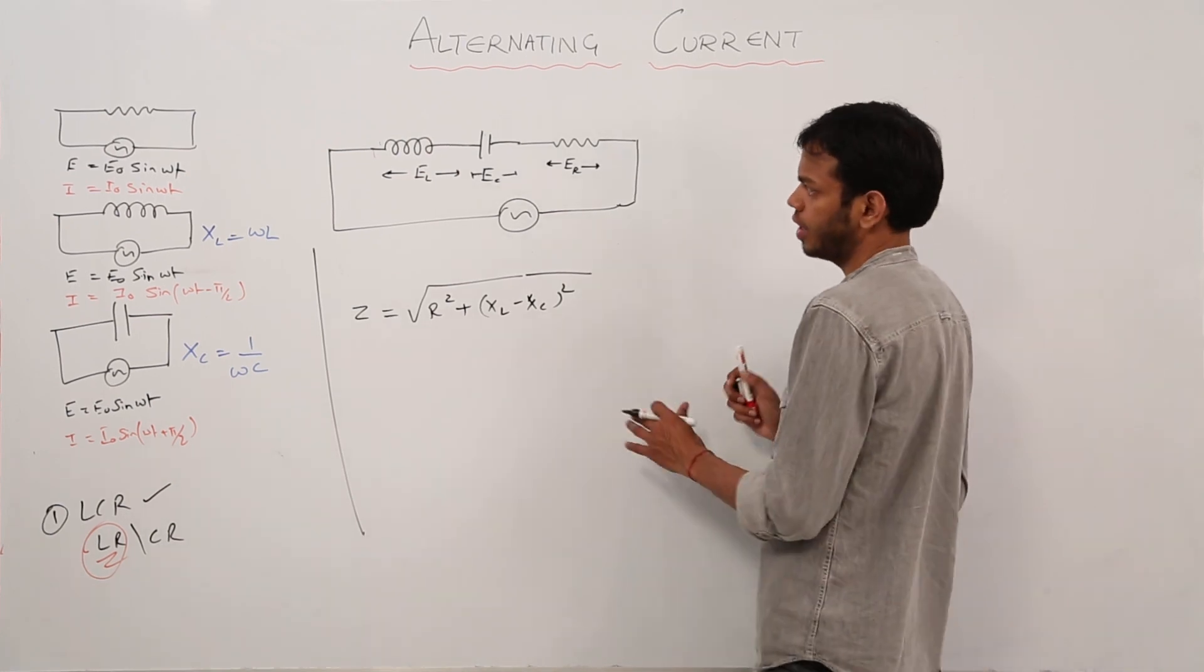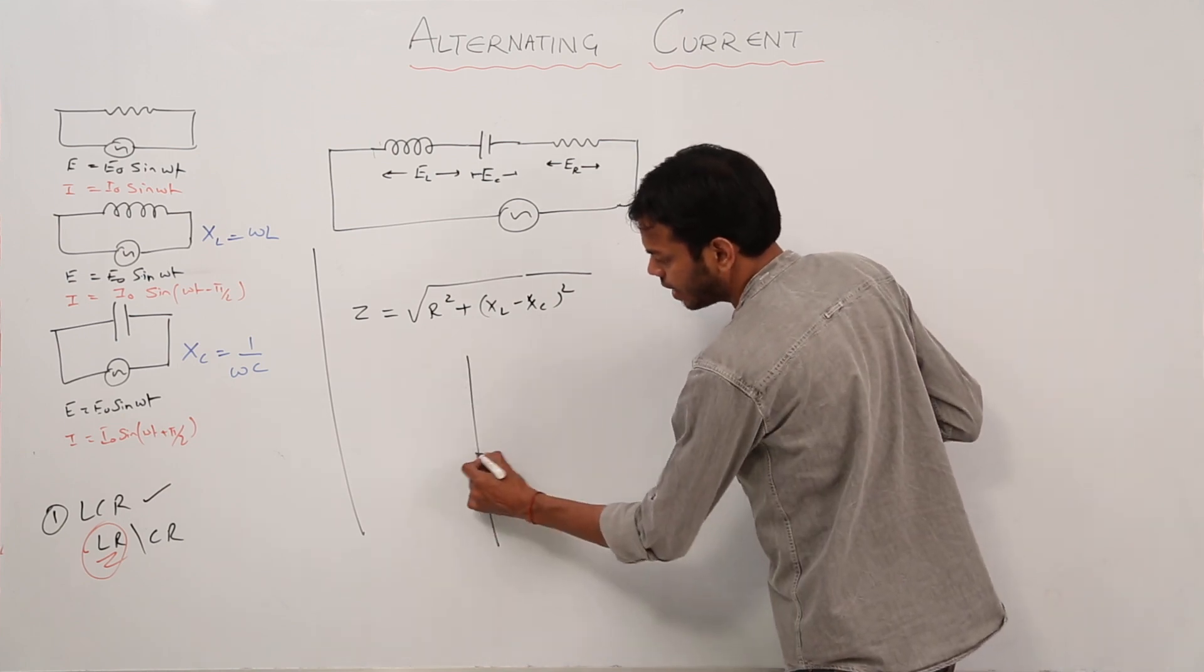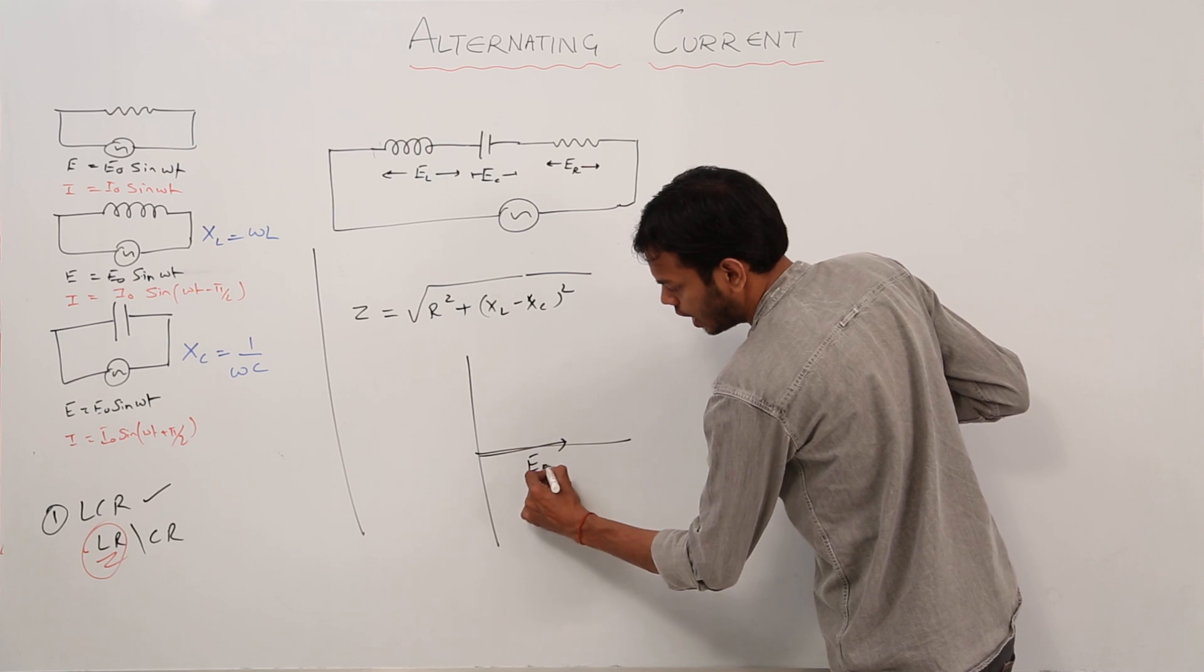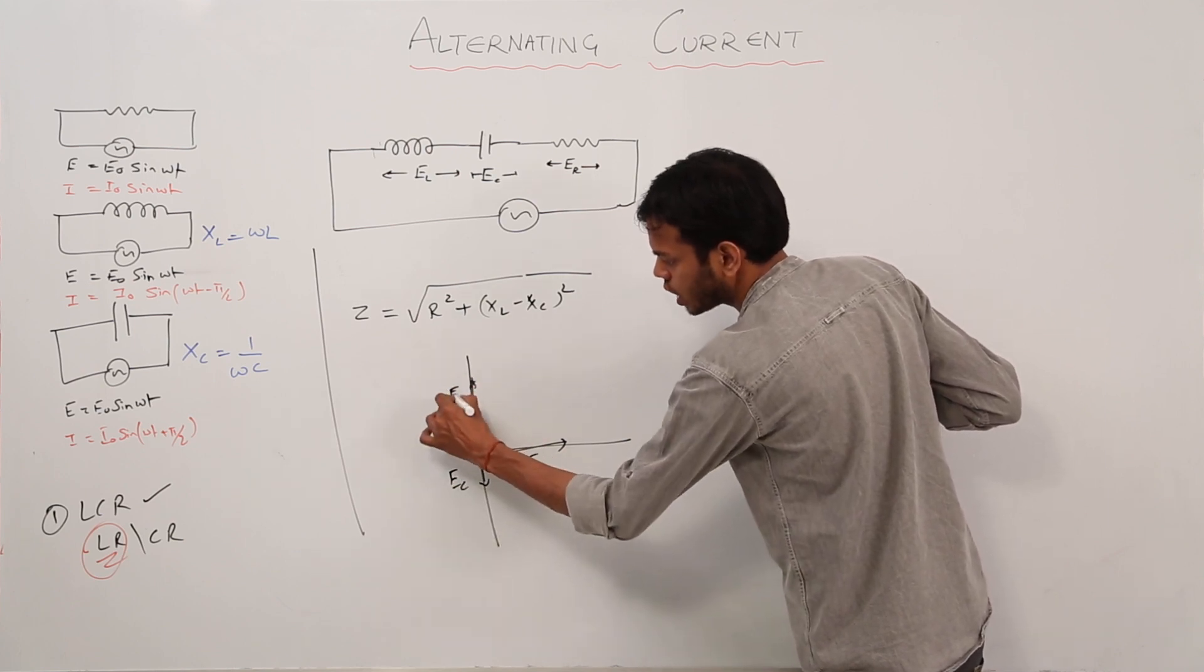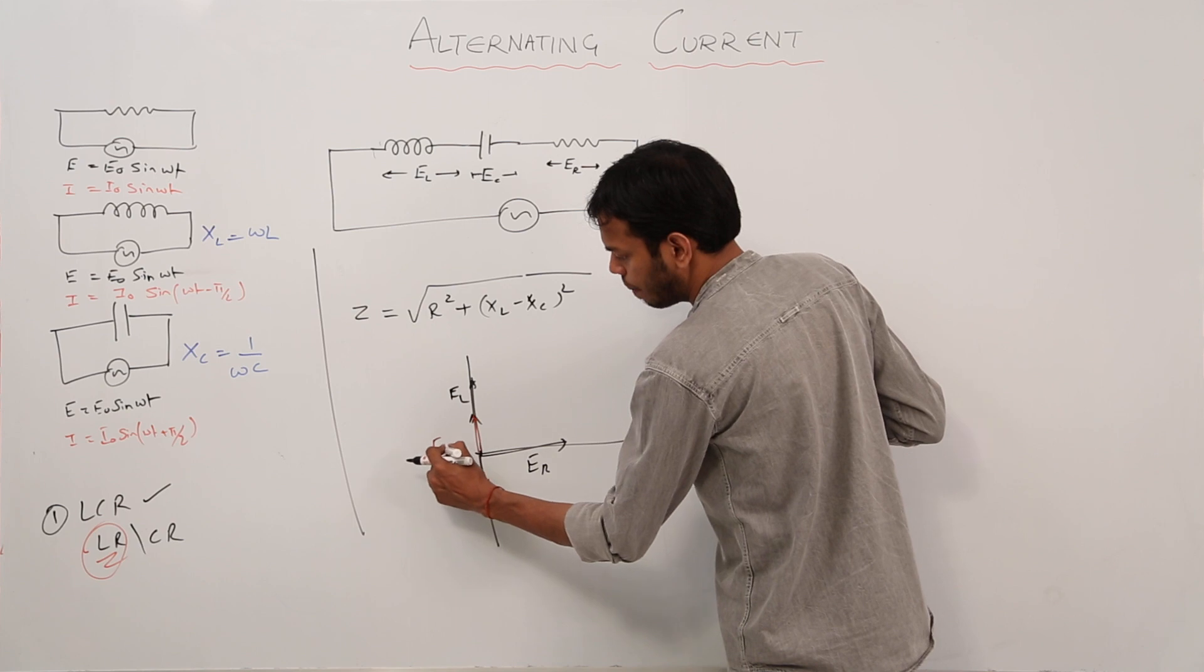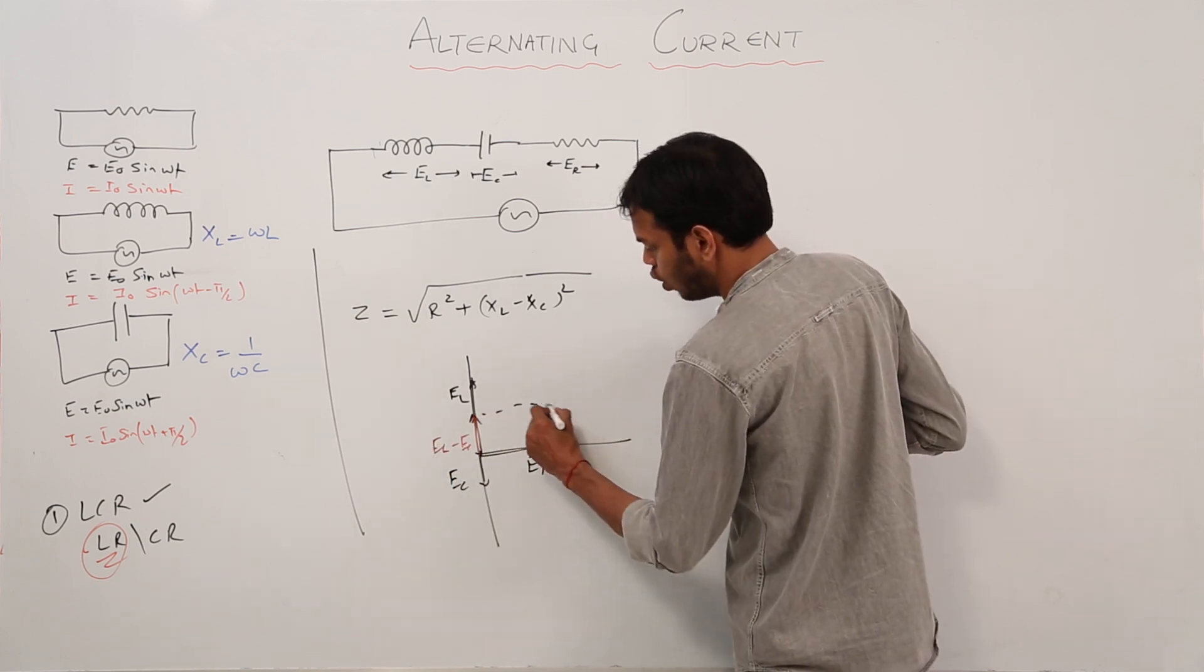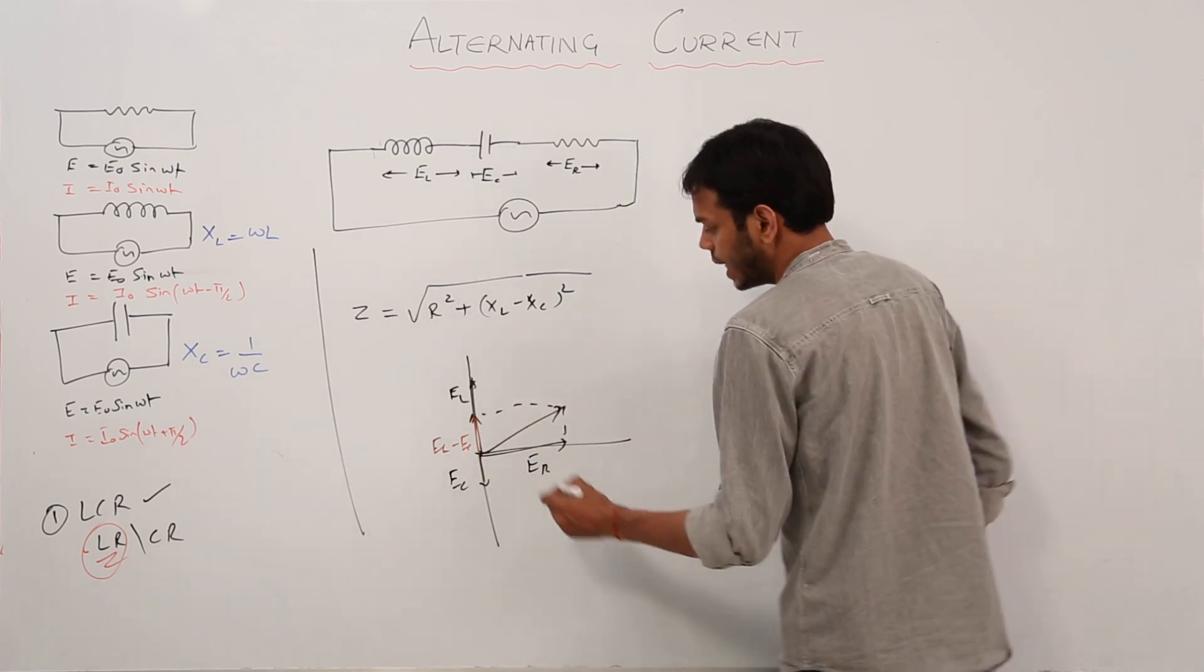Another important feature about the LCR circuit is that when we made this diagram, where we have ER, then voltage across capacitor, then voltage across inductor, this part was EL minus EC. We found the value of net voltage through which we figure out the value of impedance.